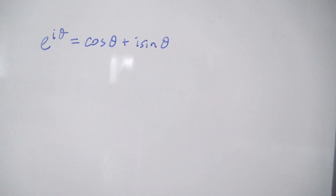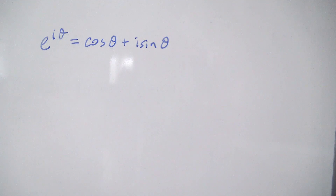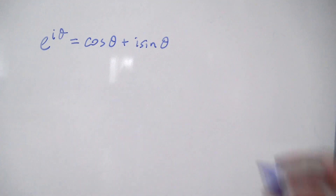Hello everybody, and today we're going to be proving the angle sum and difference identities for the cosine and the sine using Euler's formula.